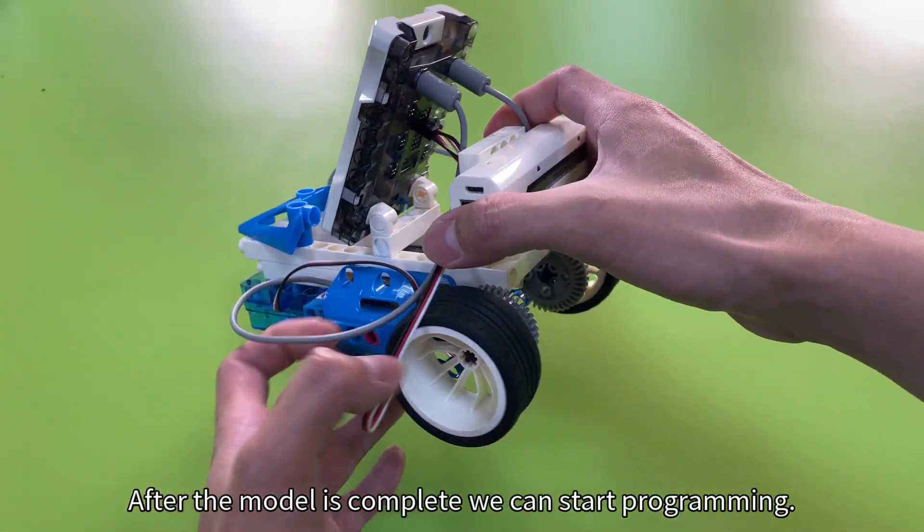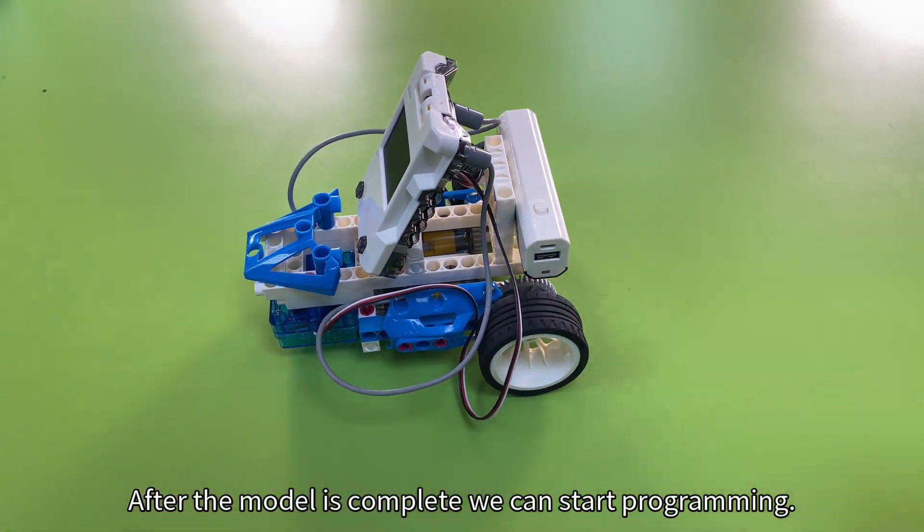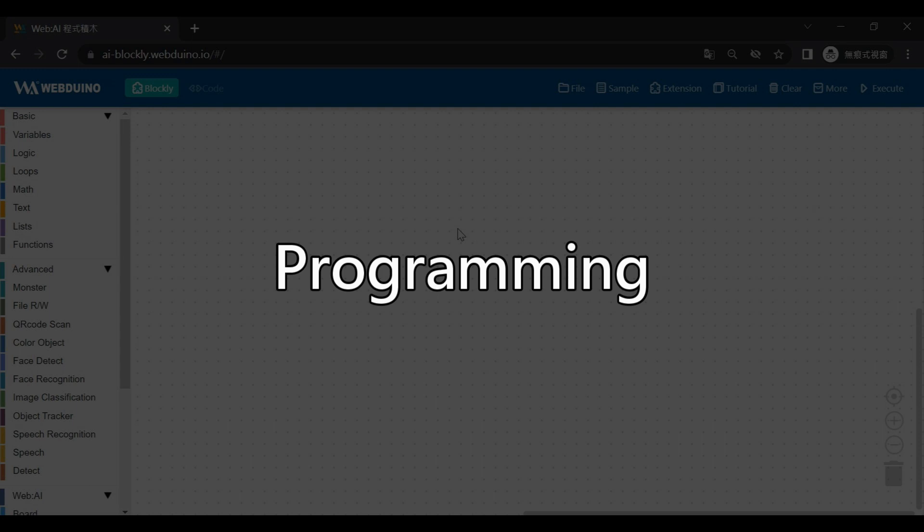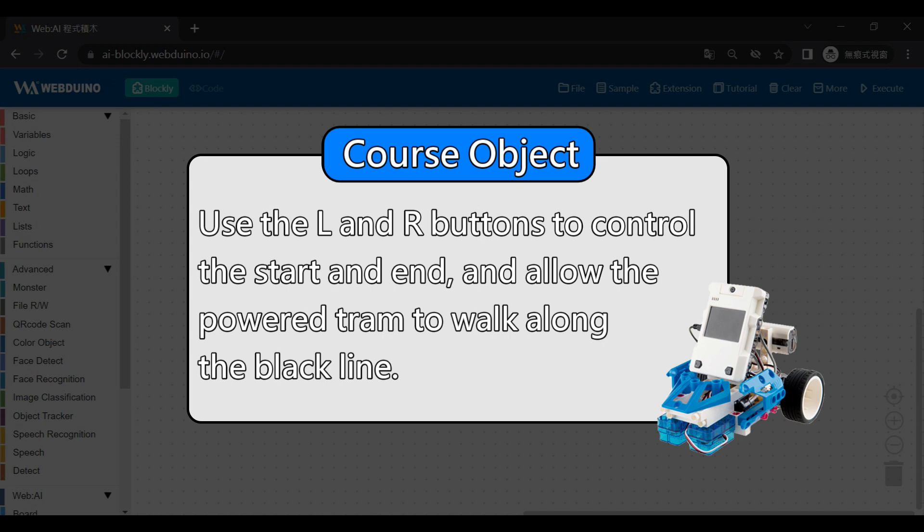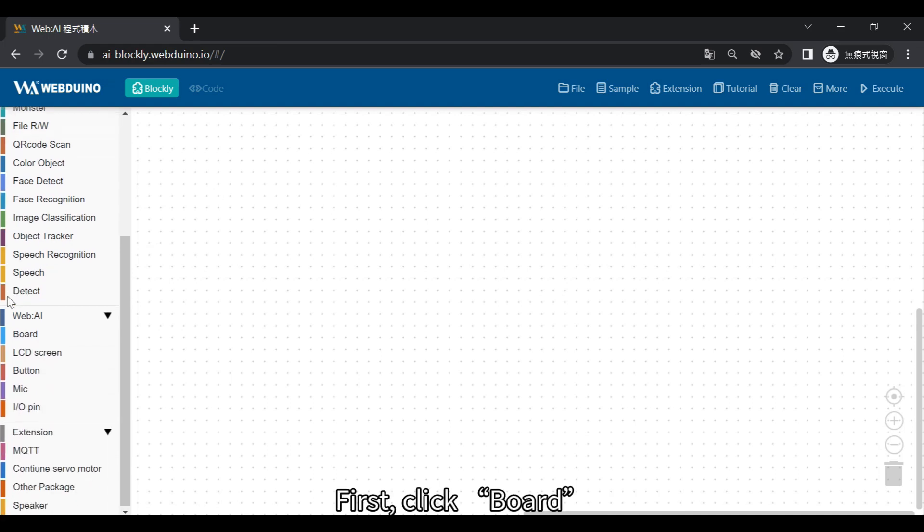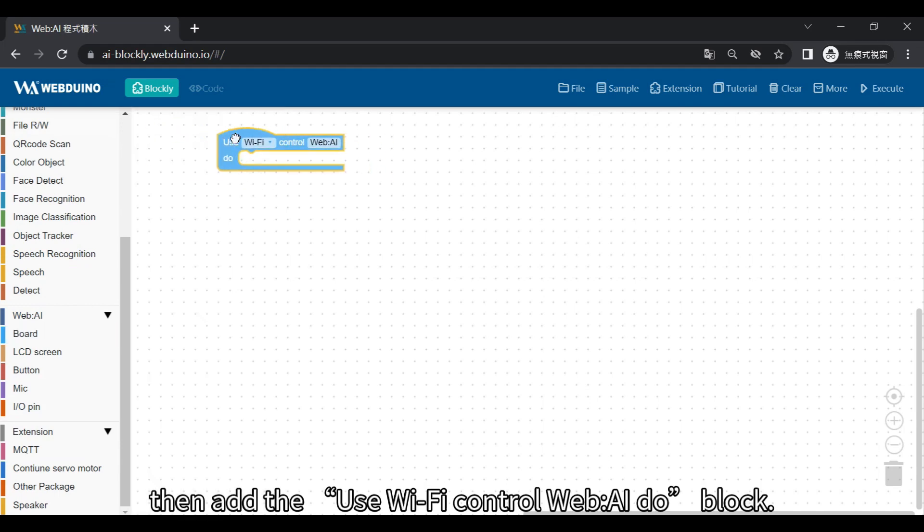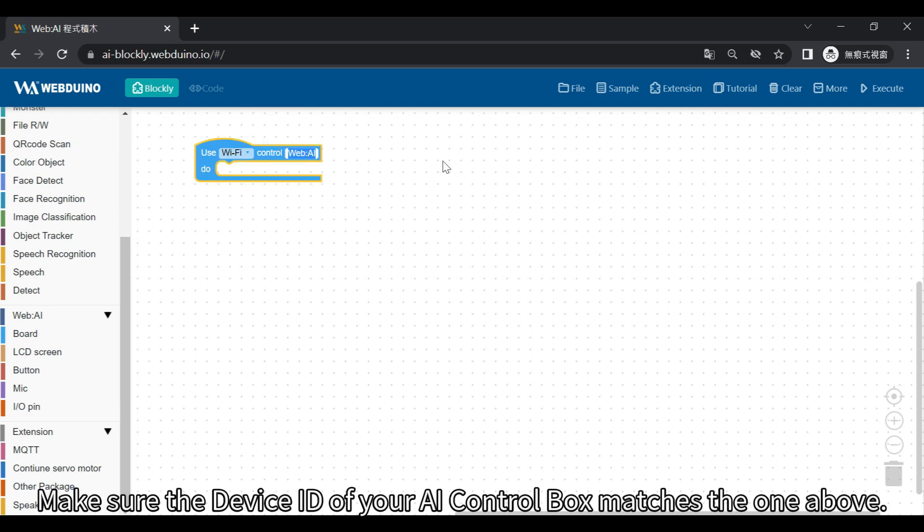After the model is complete we can start programming. OK, let's start writing the program. First, click Board, then add the Use Wi-Fi Control Web AI Dupe block. Make sure that the device ID of your AI control box matches the one above.